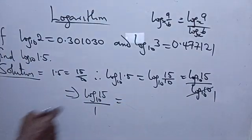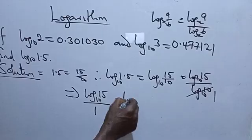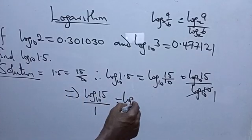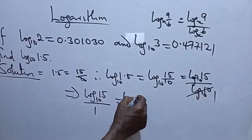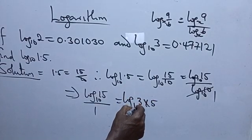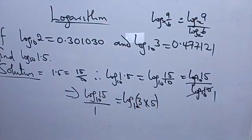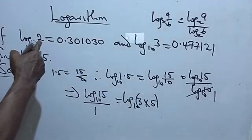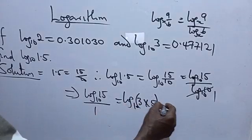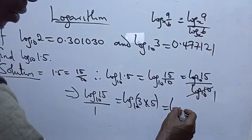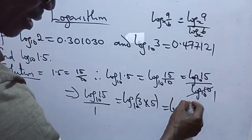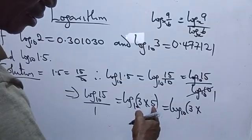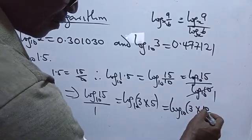What is log 15 base 10? Log 15 can be written as 3 times 5, base 10. In order to introduce 2, since we are given log 2, we can write this as log of 3 times (10 over 2), base 10. You can replace 5 by 10 over 2.